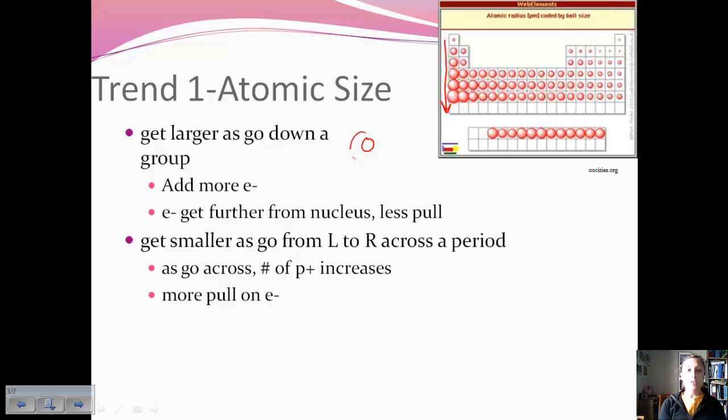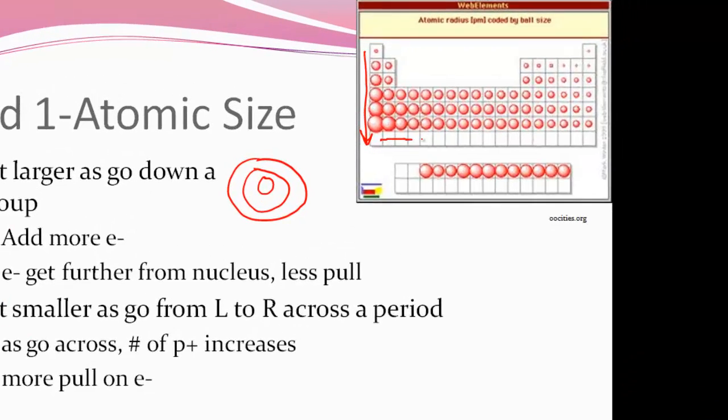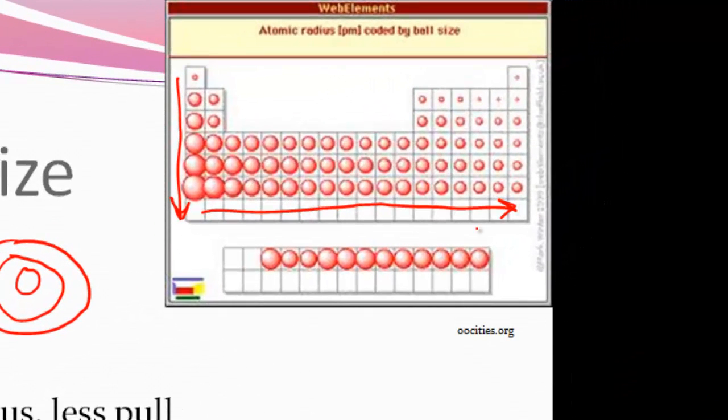So as we increase from one energy level to two to three, as we go down a group, those valence electrons or those outer electrons are getting further away from the nucleus. They're being more shielded by the inner electrons, and so they're experiencing less of an effective nuclear charge. This allows them to become further away and less pulled in by the protons. So as we go down a group, atomic size will increase. Now as we go across from left to right, you can see that atomic size is decreasing.